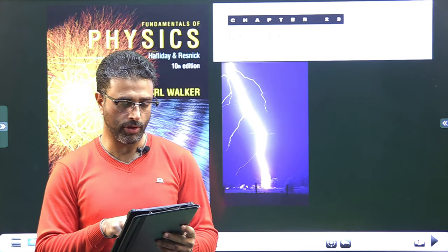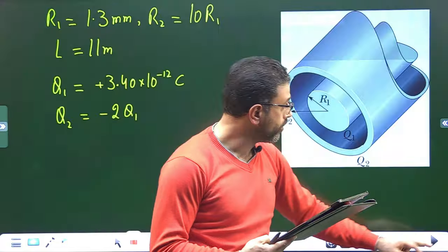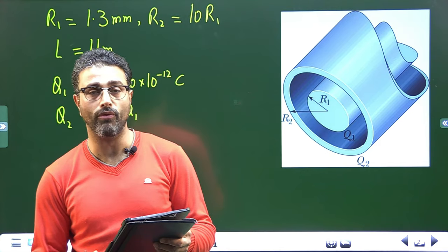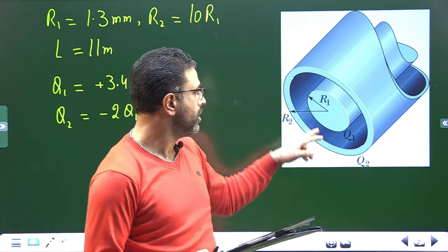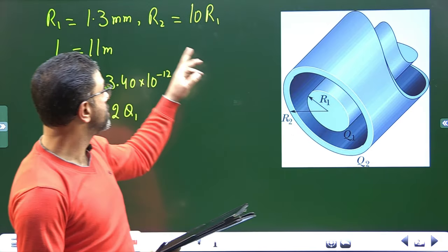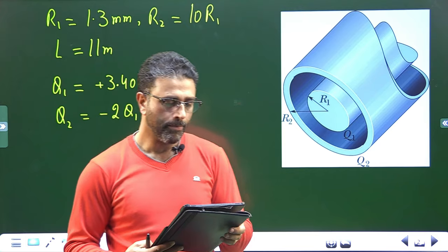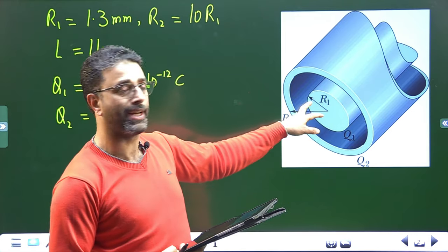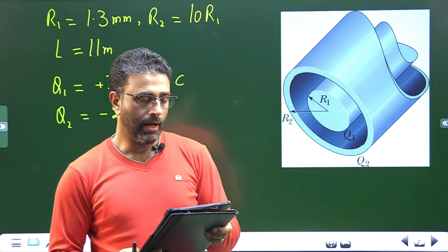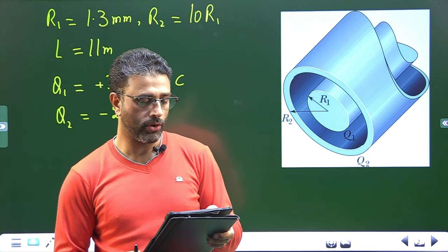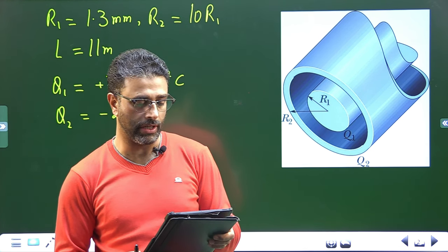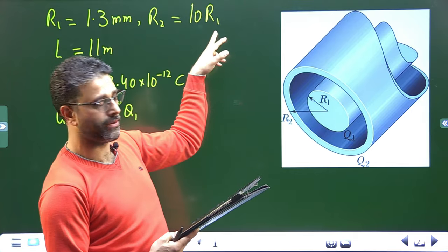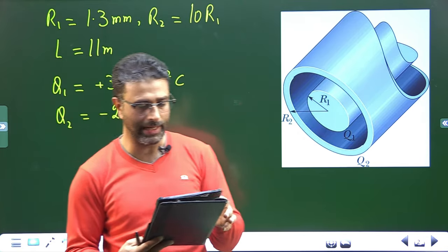Let me read out the problem. The figure is a section of a conducting rod of radius r1 equal to 1.3 millimeters — so this is a very thin rod — and length l equal to 11 meters, so the length is very large in comparison to the radius. It is inside a thin-walled coaxial conducting cylindrical shell of radius r2, where r2 is 10 times r1, and the same length of 11 meters.